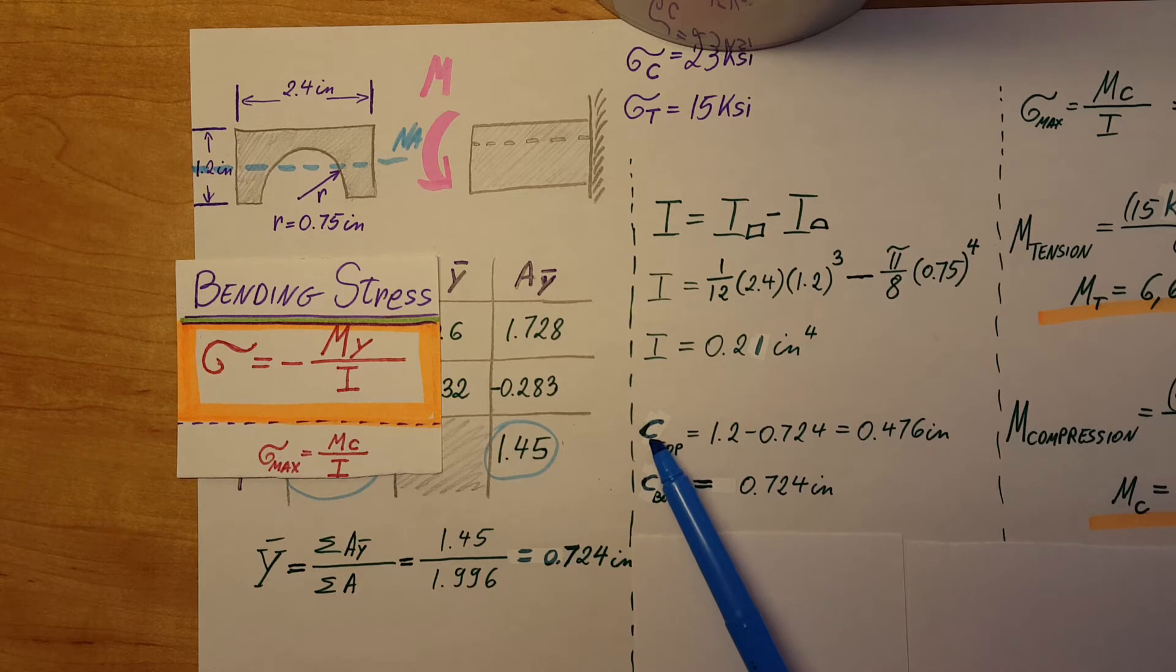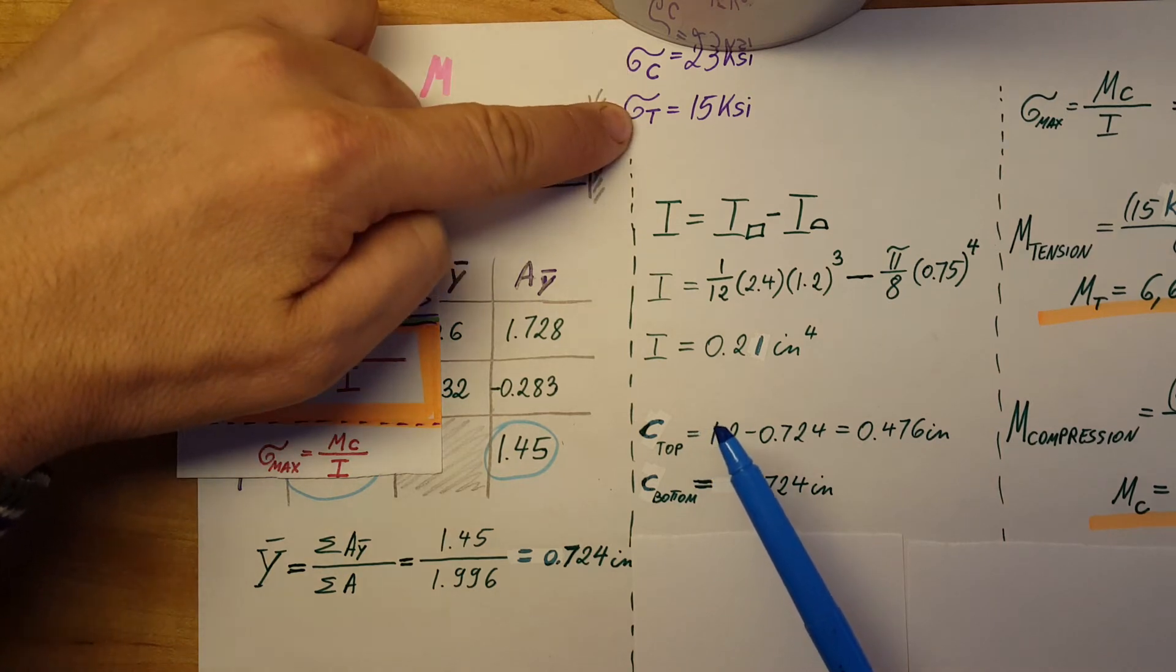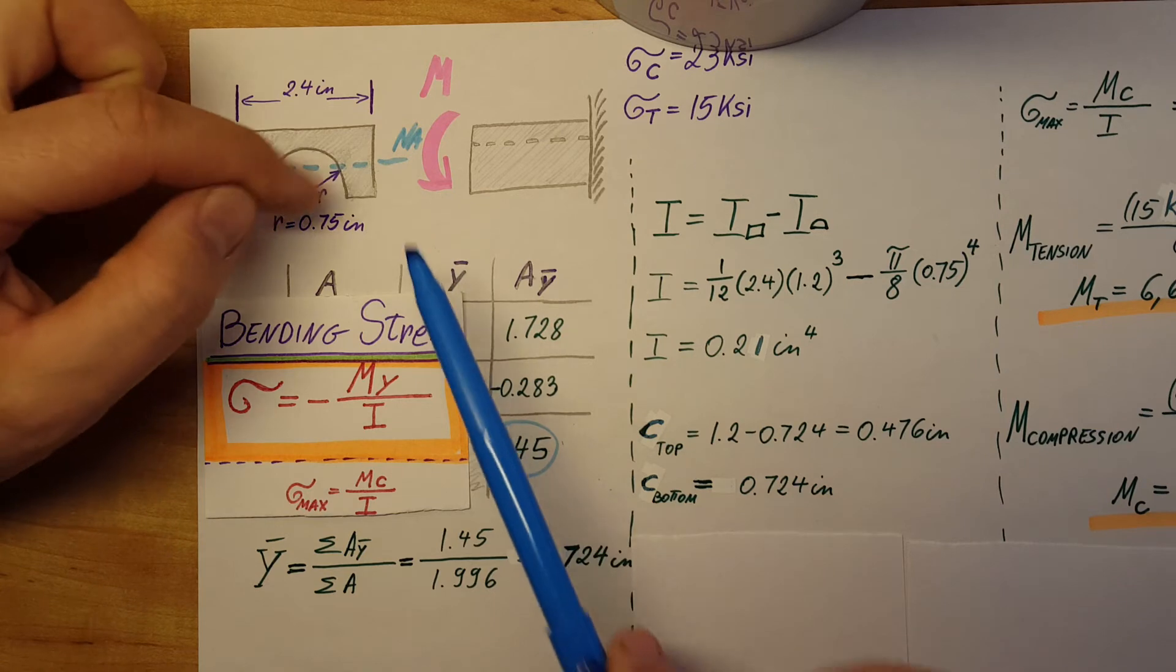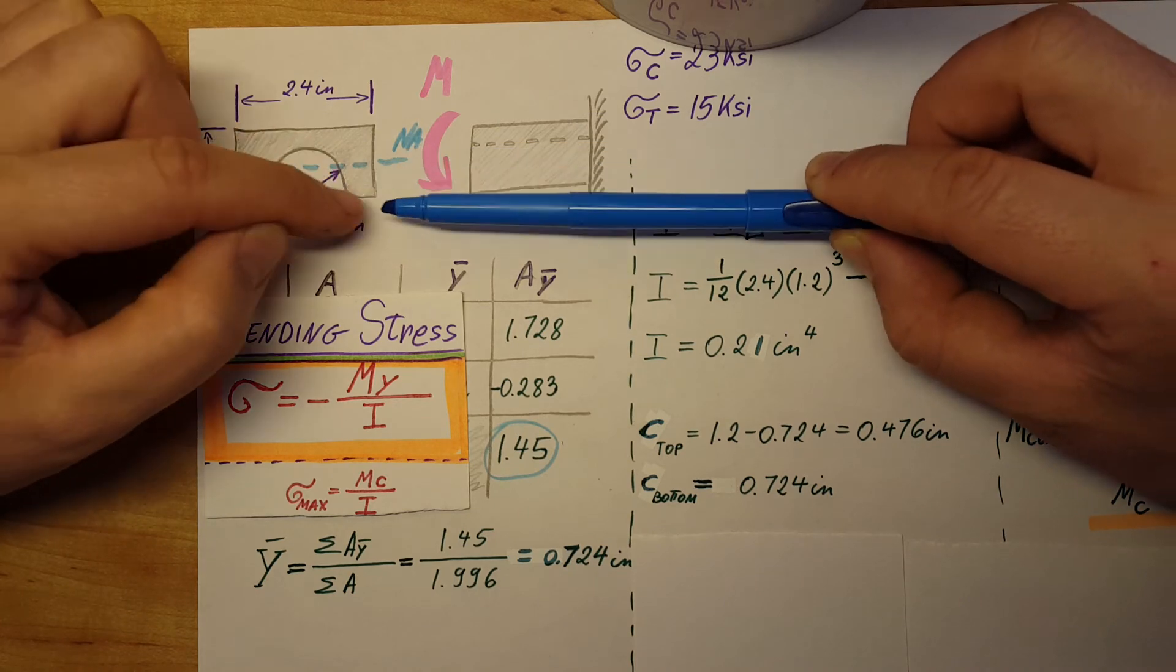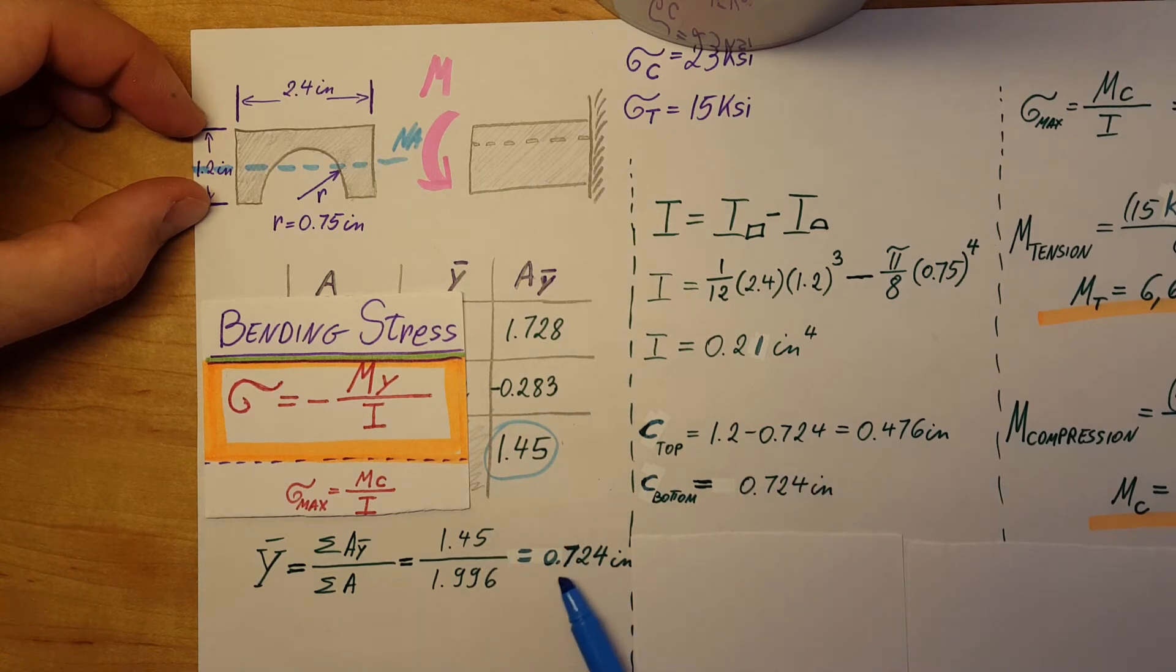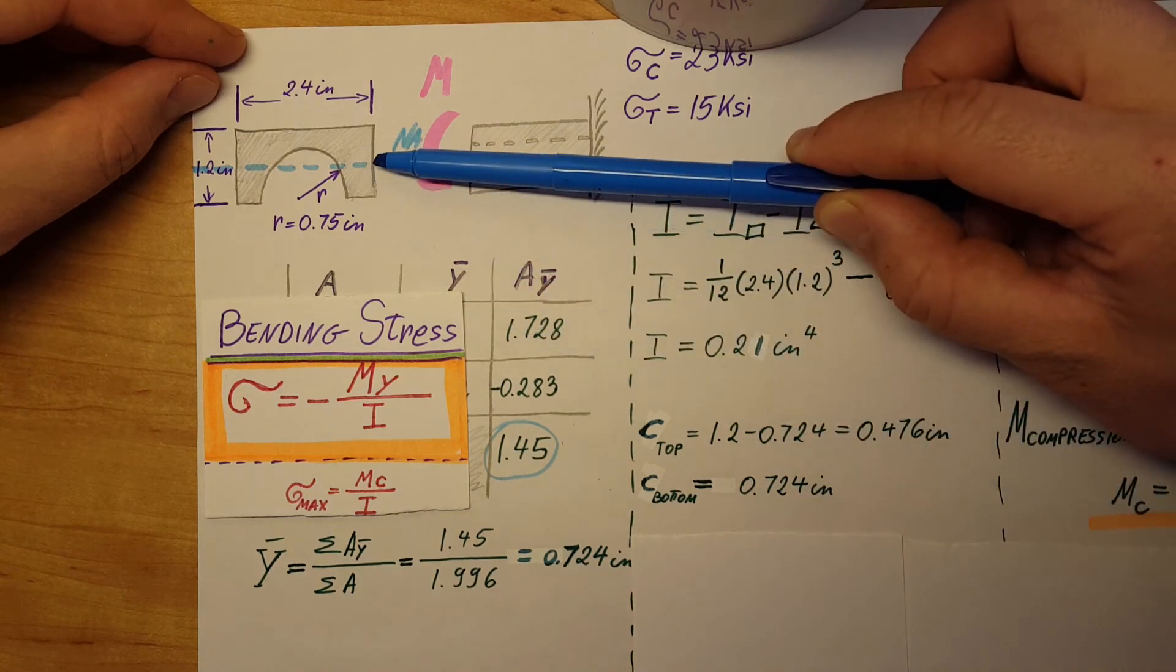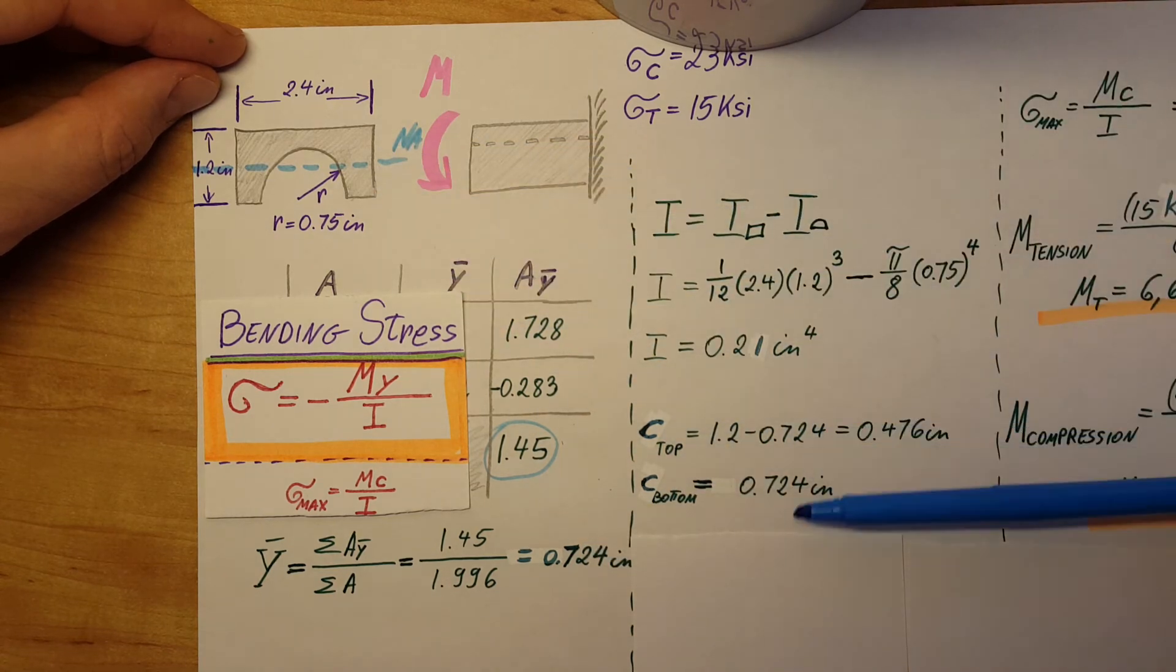Now our C's. We have to calculate for our maximum compression stress and maximum tension stress. Therefore we need to calculate the maximum distances from the neutral axis to both sides of the material - from neutral axis to the top and from neutral axis to the bottom. C top equals 1.2 minus 0.724, giving us this distance. From the bottom to neutral axis, it's the same as we found right here: 0.724. Now we have our two C's.